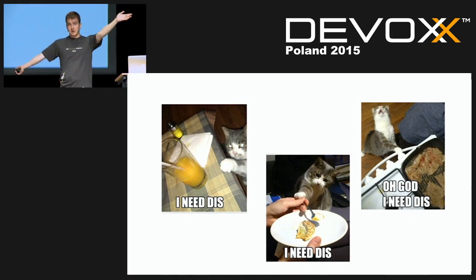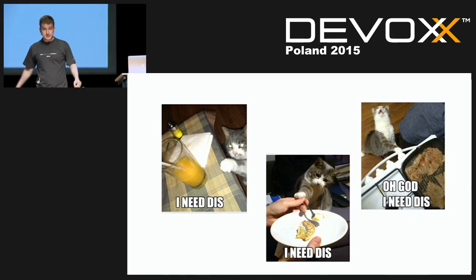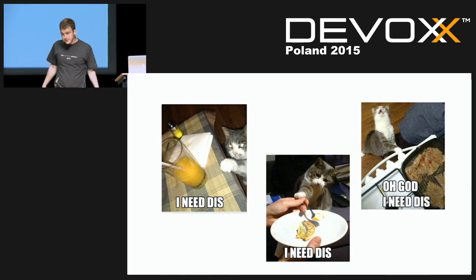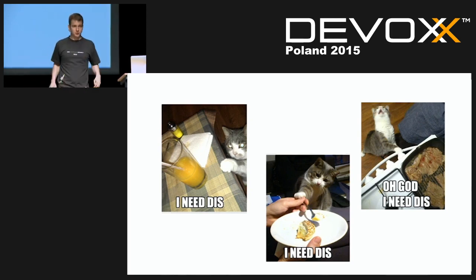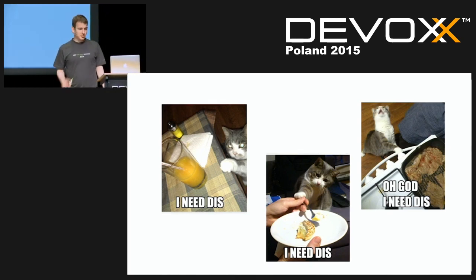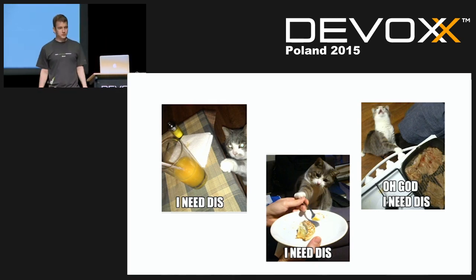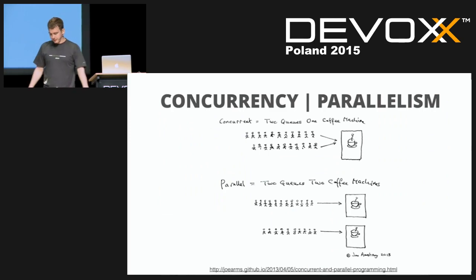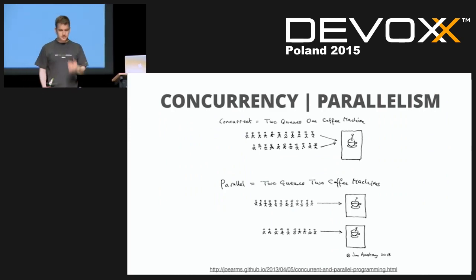That leads us to the way developers are like cats — we always need things, we see something shiny and we love to play with technology. Cats are easily entertained, perhaps a bit pessimistic about estimates but easily entertained. So let's explore the core problem of any concurrent computation.